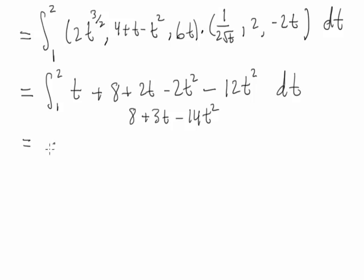So the antiderivative of this is 8t + 3t²/2 - 14t³/3, all evaluated from 1 to 2.